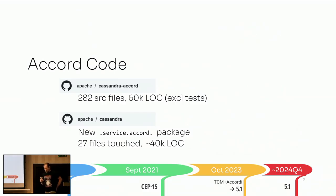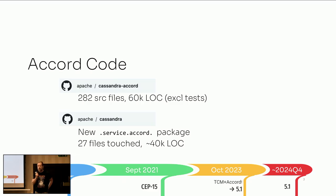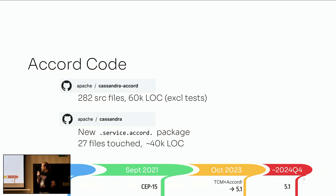What I am going to talk about is the Accord consensus protocol, which is of course being implemented at the moment. It is being implemented as a standalone library in the Cassandra Accord project. It is currently around 280 source files, 60,000 lines of code. It's not a big project, though the Cassandra code can often be quite condensed.